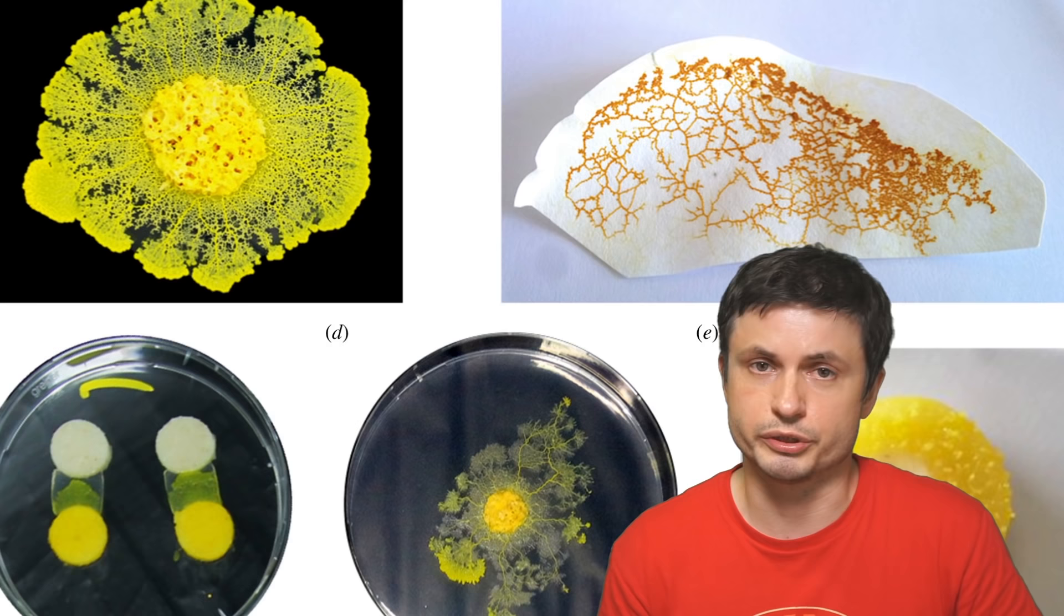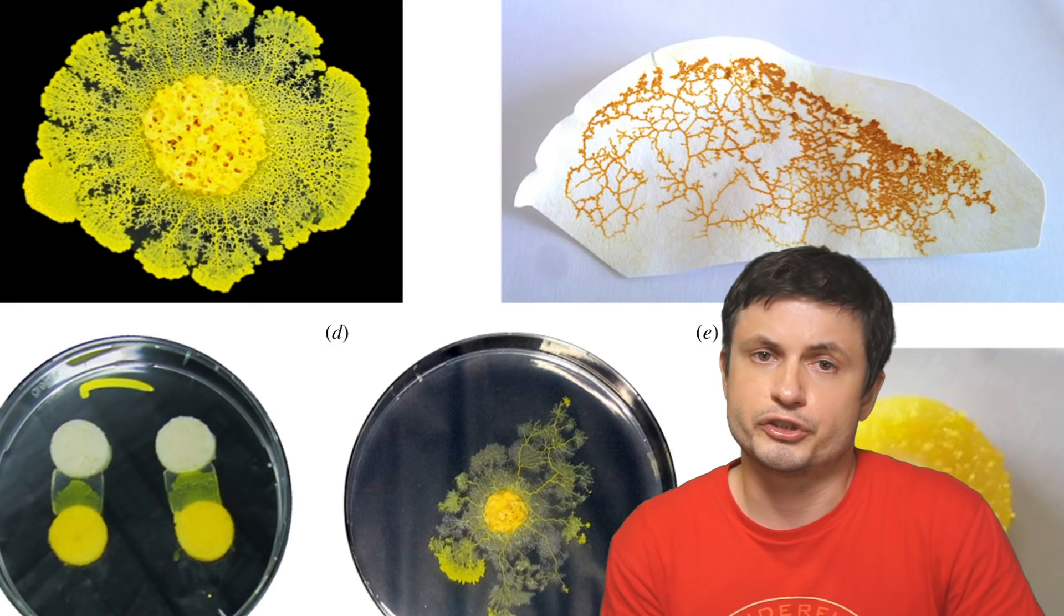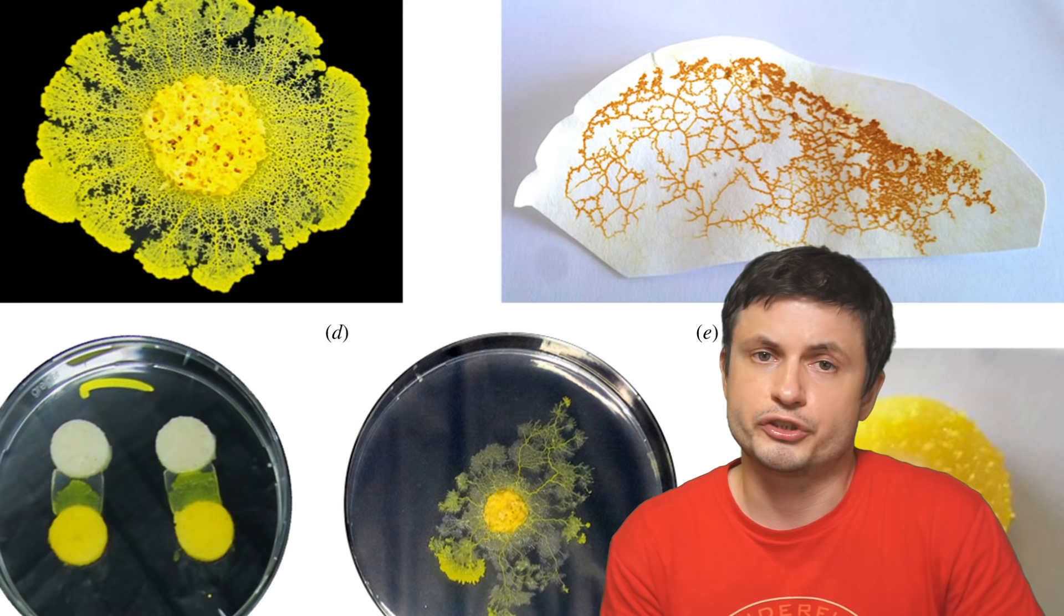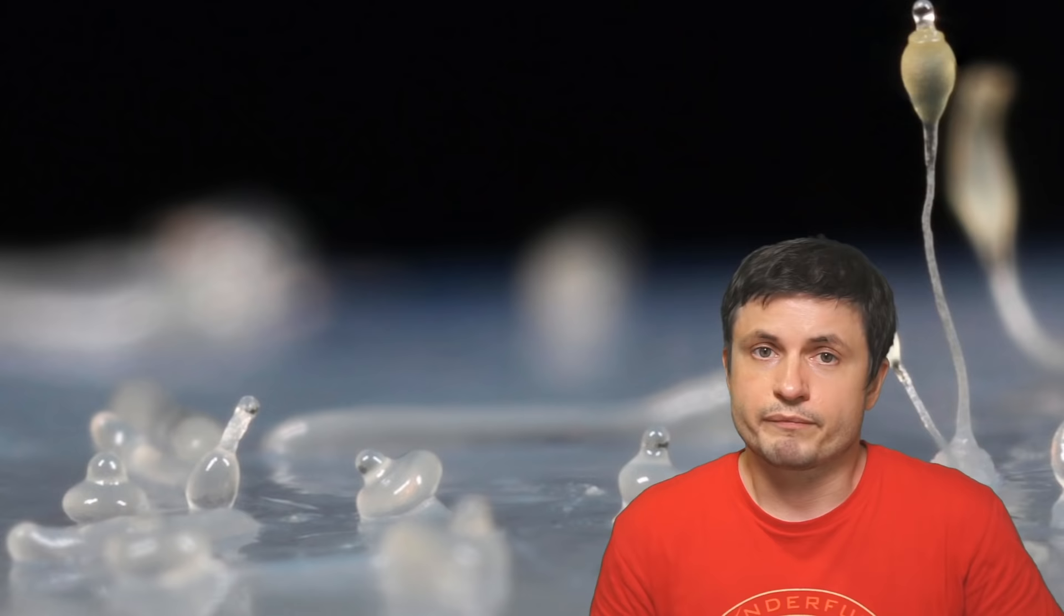So this paper right here for example, once again showed that this organism is able to remember certain types of substances that it doesn't really like. And so when the scientists introduced a substance that the mold didn't really enjoy, it ended up creating a lot of really complex shapes just to escape the environment.